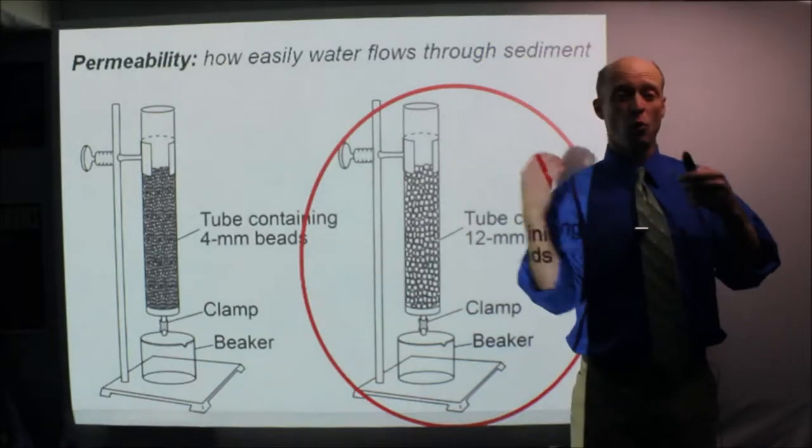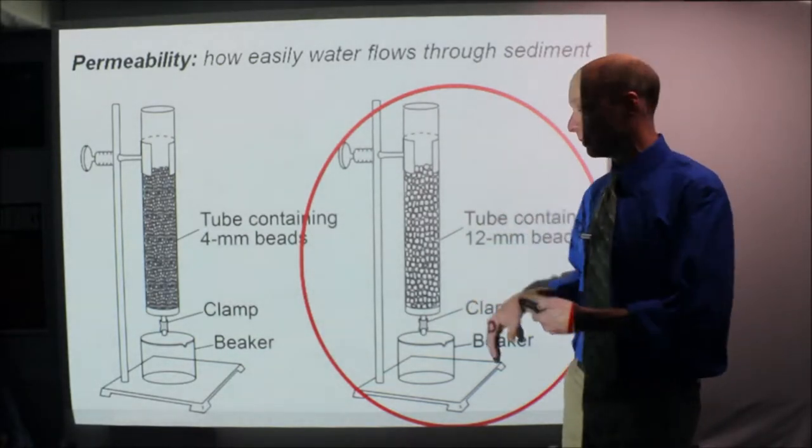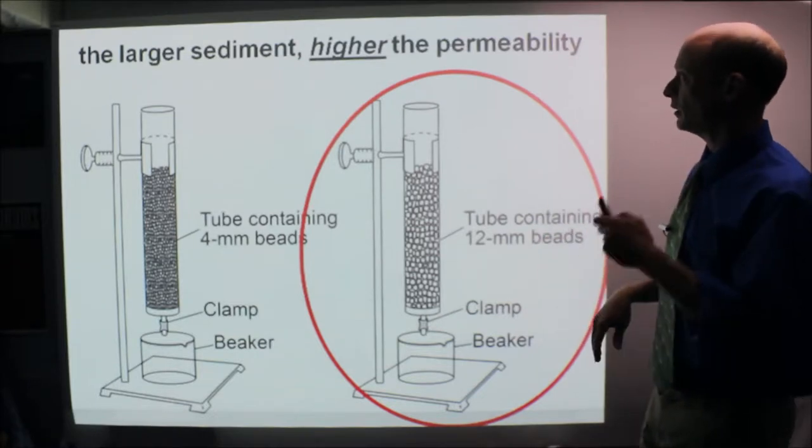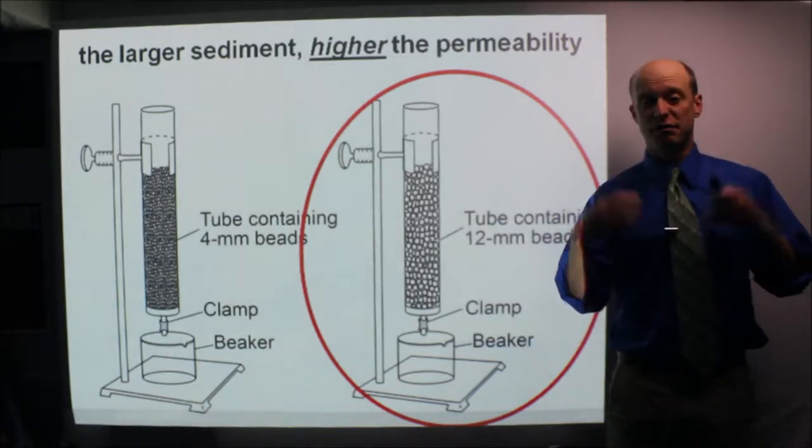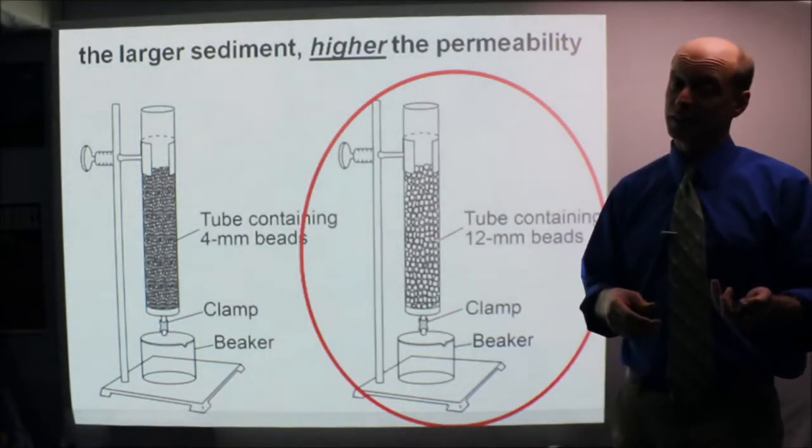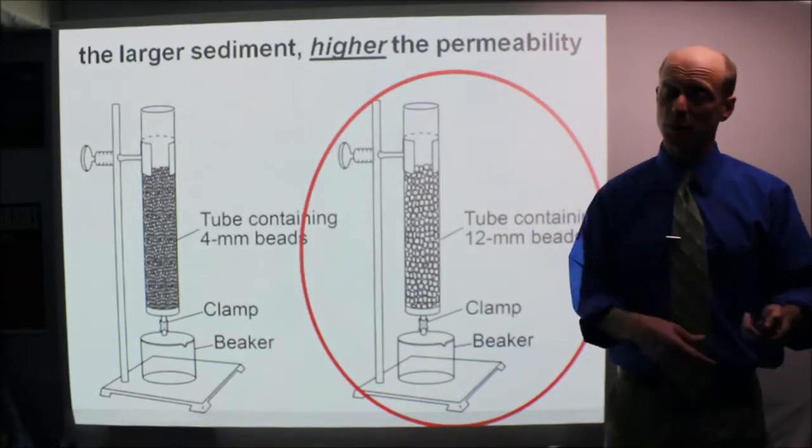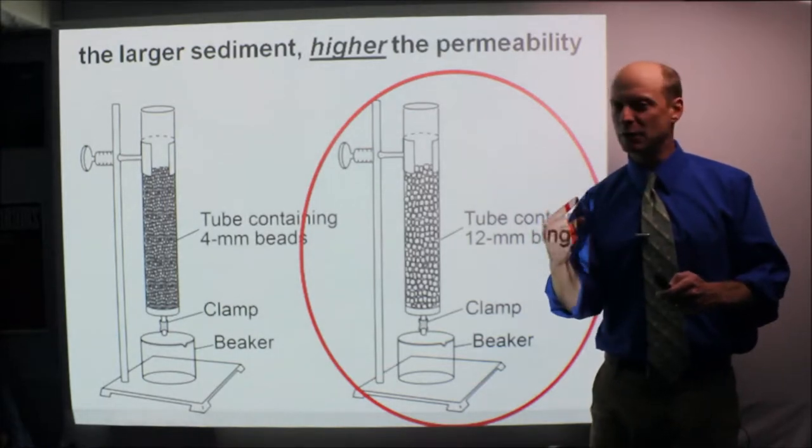High permeability: water flows easily. Low permeability: it goes slower. A key thing to permeability: the larger the sediment, the higher the permeability, or the larger the sediment is, the faster water goes through. The converse is true: the smaller it is, the slower it goes through, therefore the lower permeability. These are things you just need to buckle down and get in your brain and study.